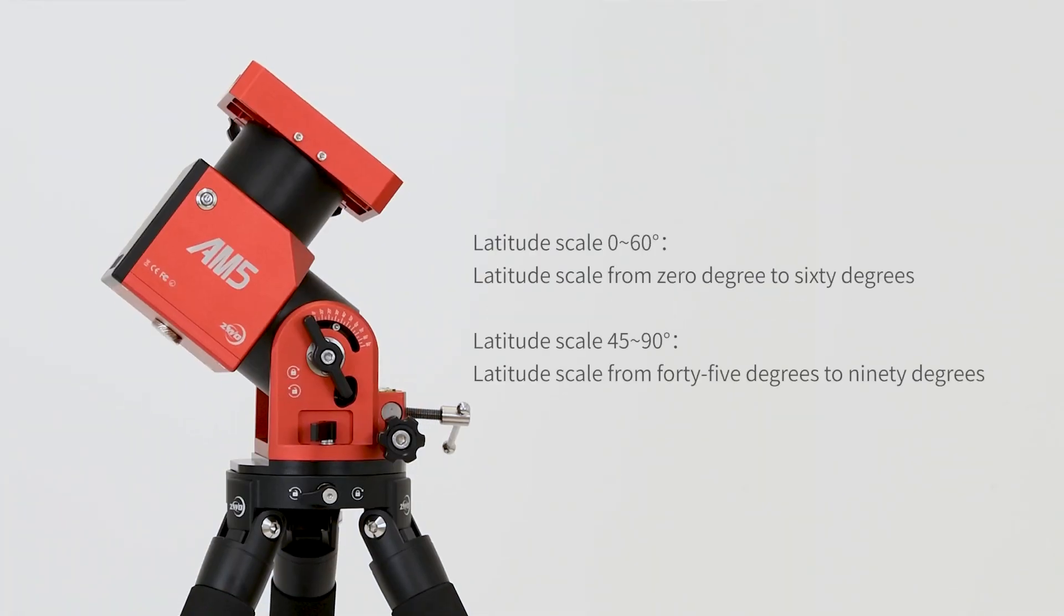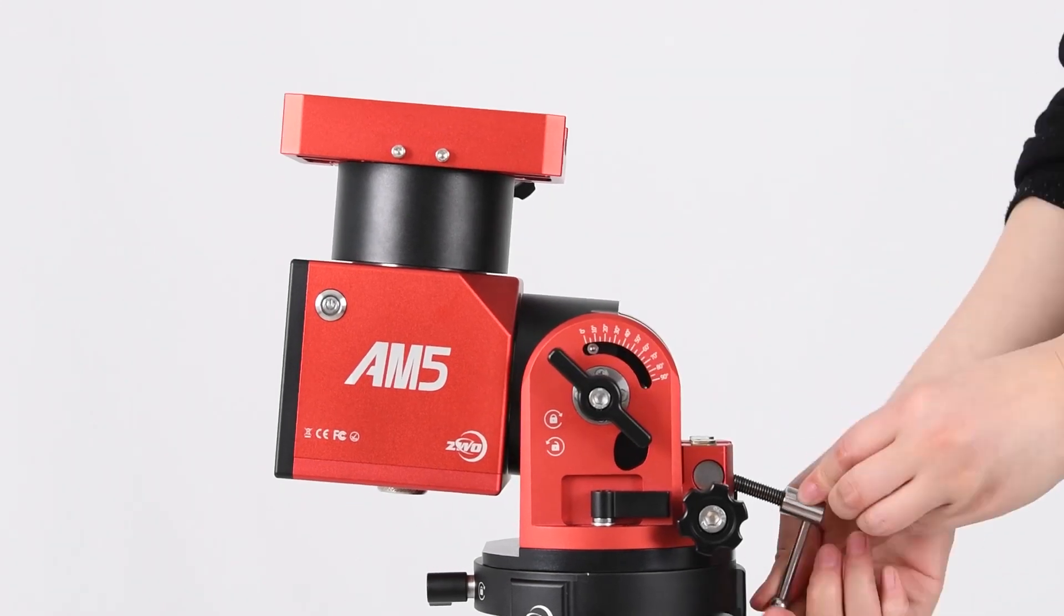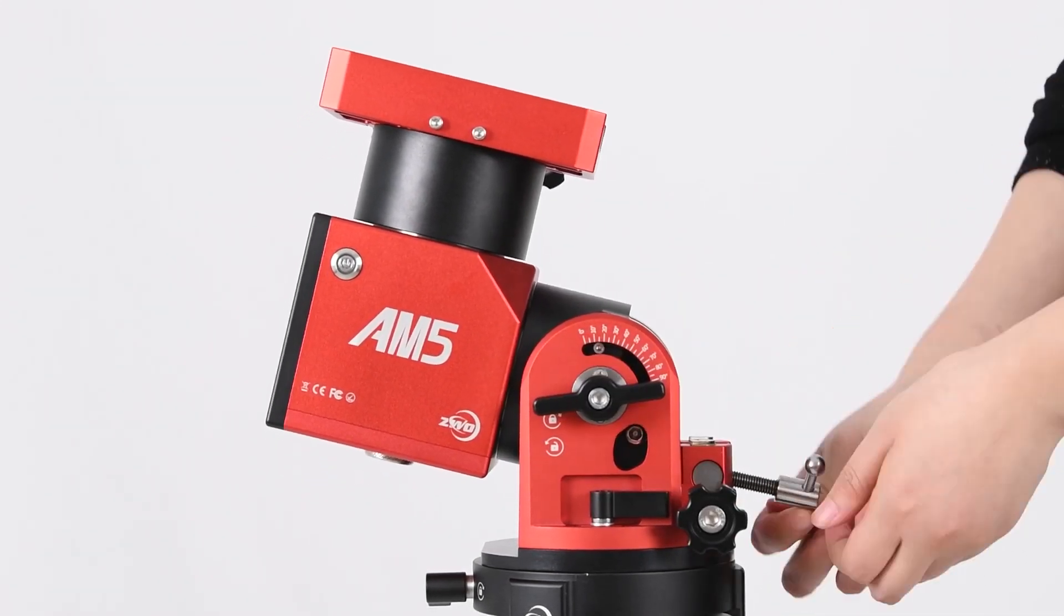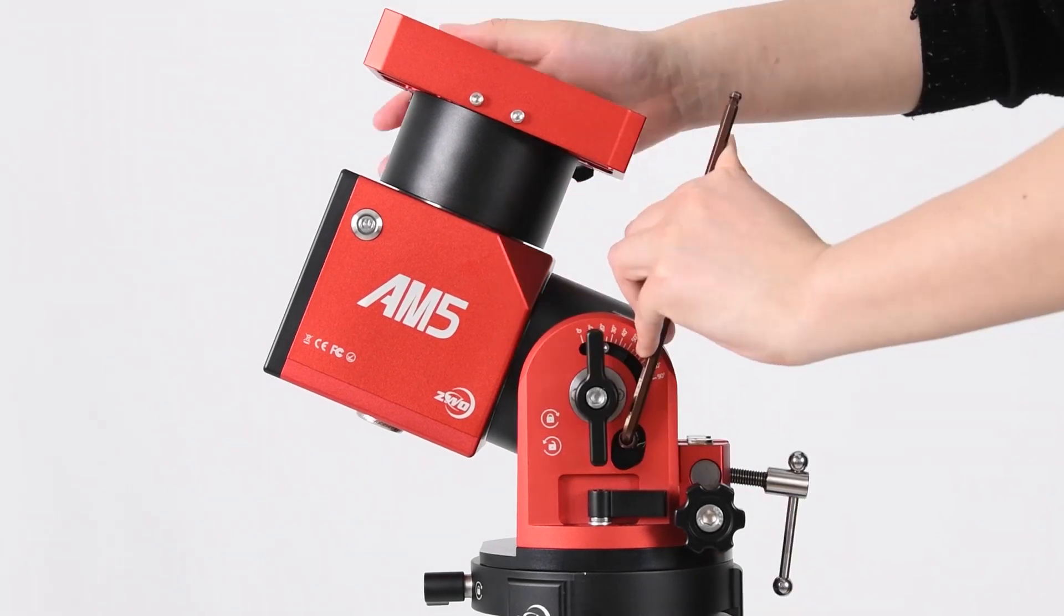To adjust range, there are two gear knobs located on the mount allowing you to adjust latitude range from 0 degrees to 60 degrees and 45 degrees to 90 degrees respectively. To shift from using one knob to the other, first loosen the tension grips on each side. Rotate the altitude adjustment lever clockwise until it reads 20 degrees in latitude scale.